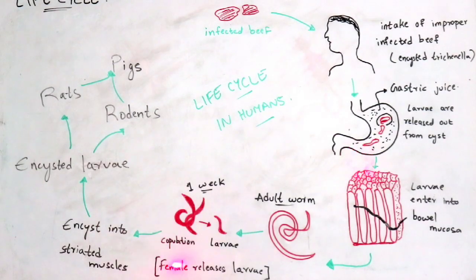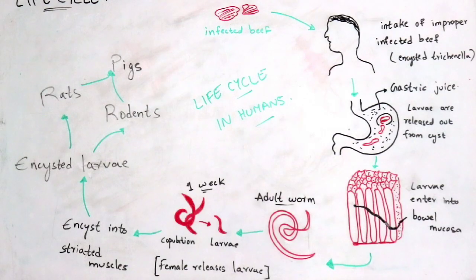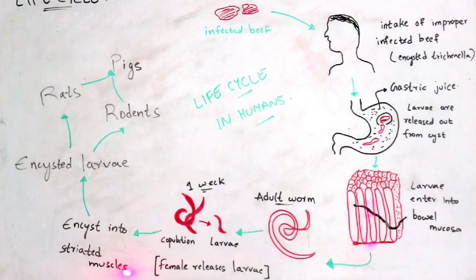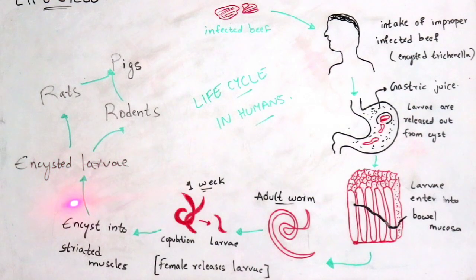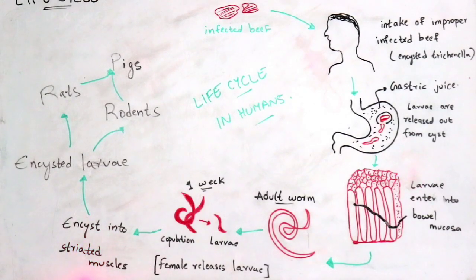After copulation, larvae are released by the female worm. These larvae enter into the striated muscles, where encystation takes place. The lifespan of encystation within the striated muscles is 4 to 5 weeks, after which the larvae transform into encysted larvae.